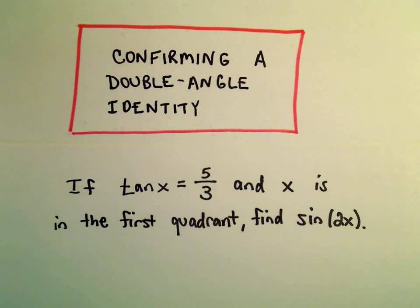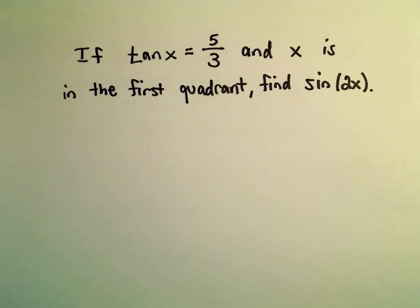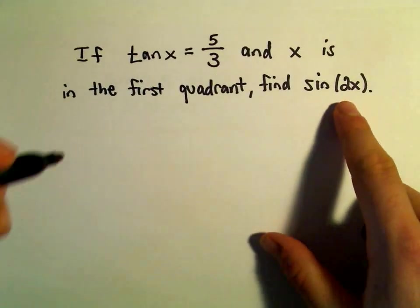Okay, so just another example here using a double angle identity. So suppose we're given that tangent of x is 5 thirds, x is in the first quadrant, we want to find sine of 2x.